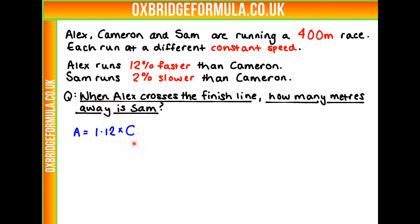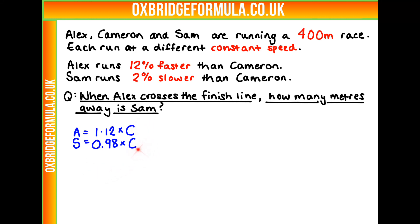If we do the same thing for Sam, Sam is going to be 2% slower than Cameron, or 98% of Cameron's speed — so 0.98 times C. Now our question asks for a comparison of Alex and Sam, so we want an equation that puts A and S together. They both have C in their equations, so if we rearrange the top one we get C equals A over 1.12.